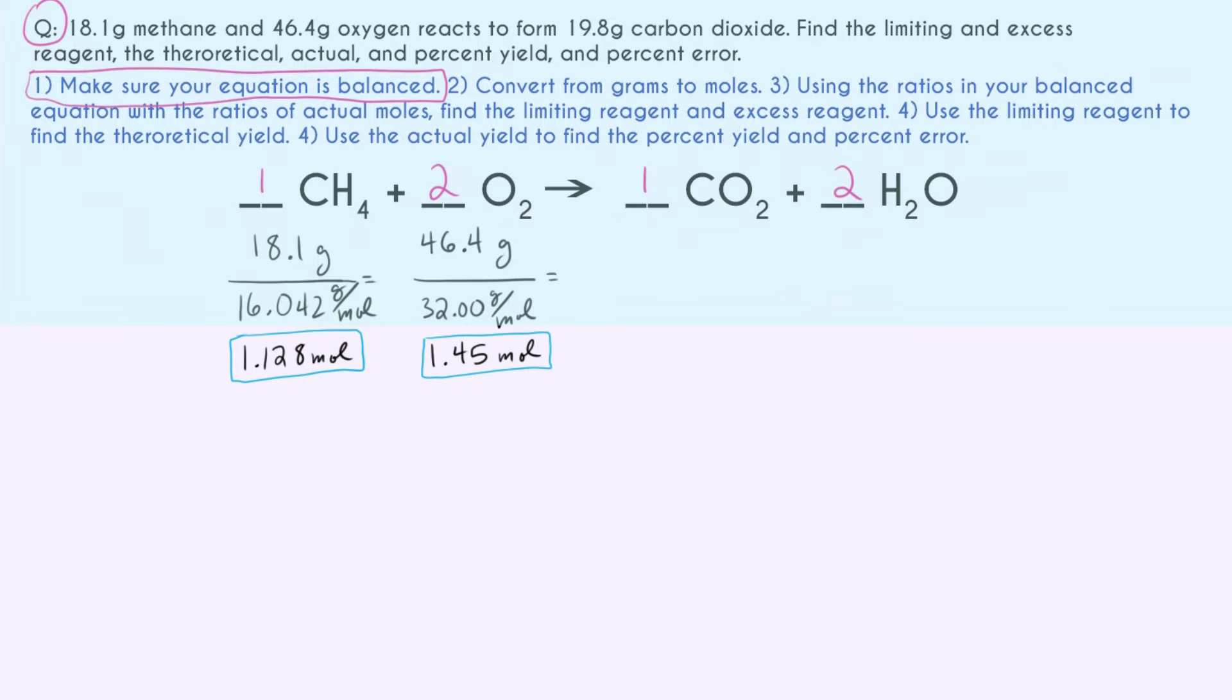So the way that I like to do these problems is I like to pick each reagent and say, okay, how much of the other reagent would I need to completely use up what I have? So let's go ahead and pick methane first. We can see that our mole ratio between methane and oxygen is one to two. So if I have one mole of methane, I'm going to need two moles of O2. But I don't have one mole of methane—I have 1.128 moles. So doing a little bit of math, I can figure out that I would need 2.257 moles of O2 to completely use up all of my methane.